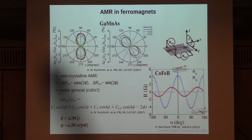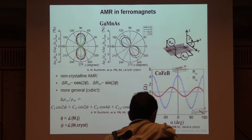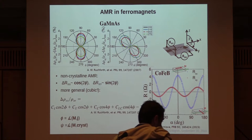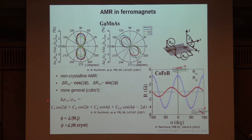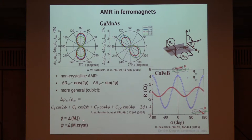When one looks in detail, there are more terms contributing to AMR. For example, in a cubic material — gallium manganese arsenide — it was shown that there are also crystalline terms. The crystalline terms depend on the direction of the magnetization not versus the current, but versus the crystal direction. You need a single crystal to detect this, and we will see how this also looks in antiferromagnets.